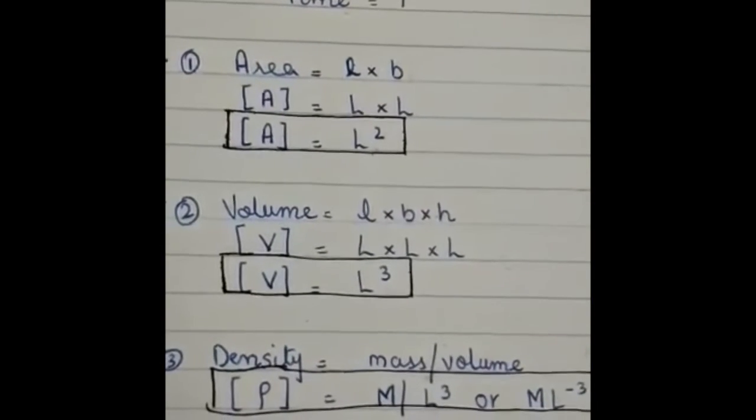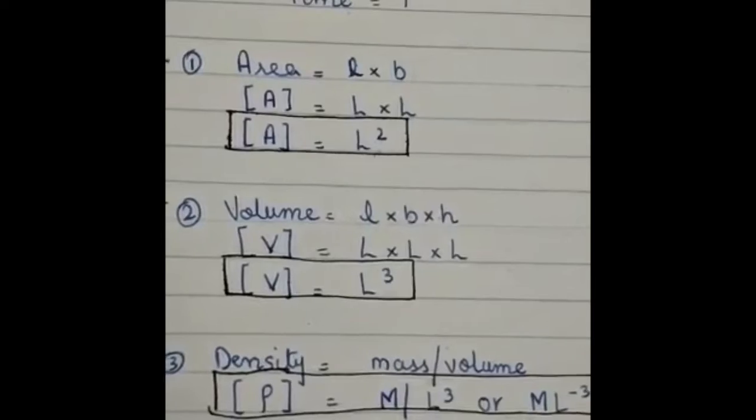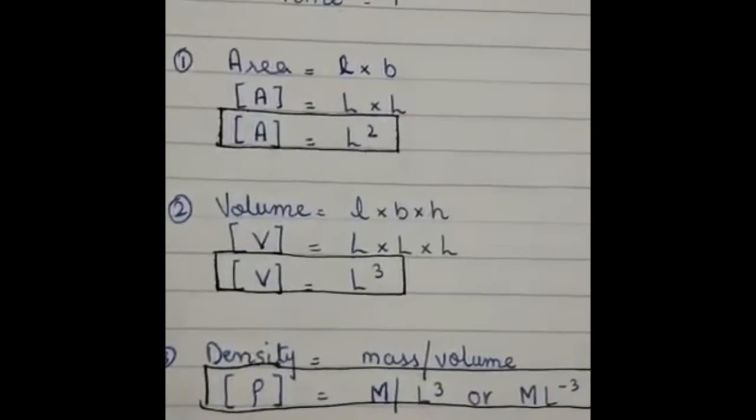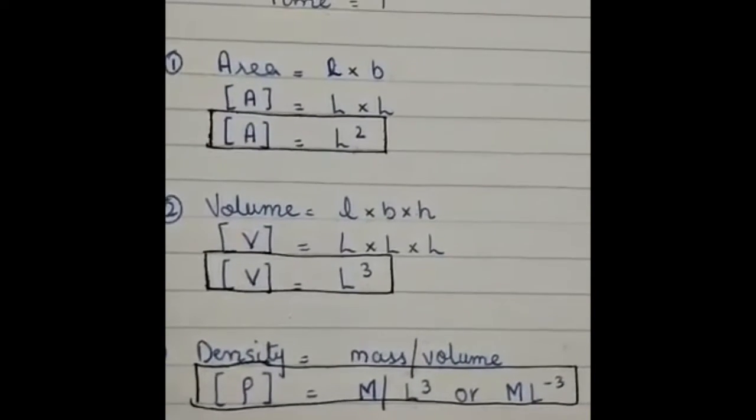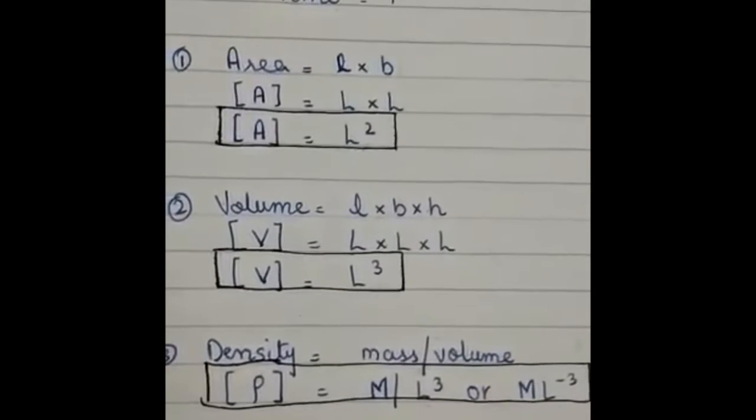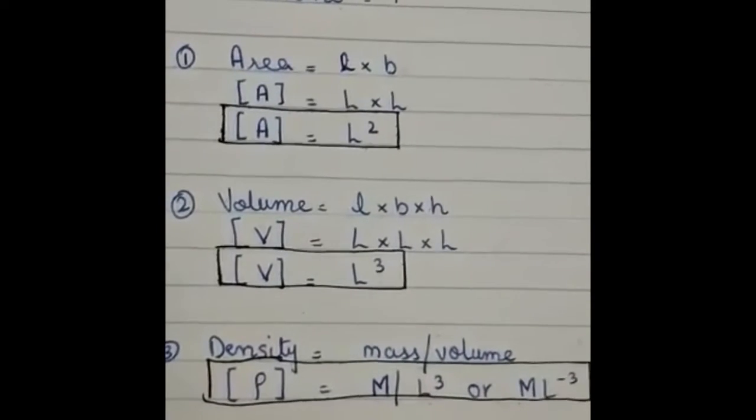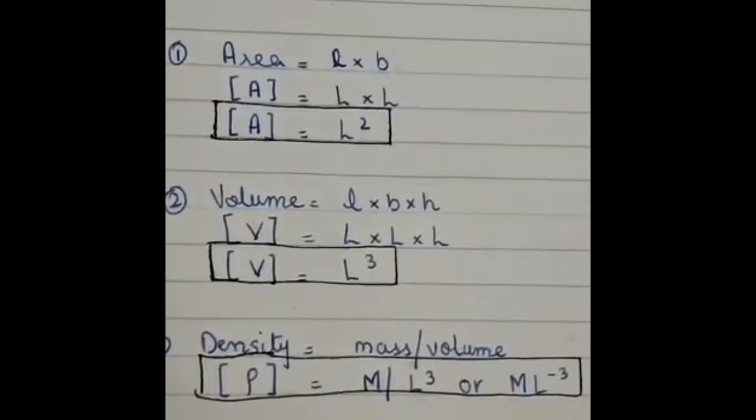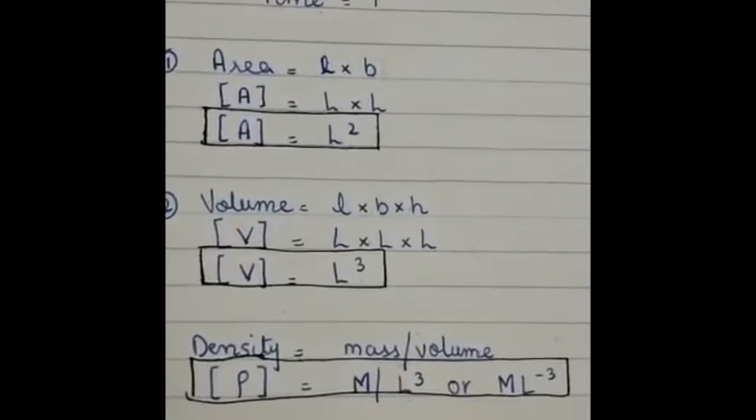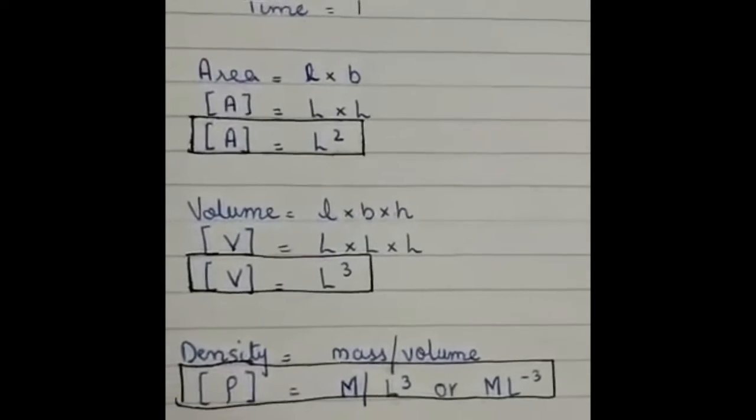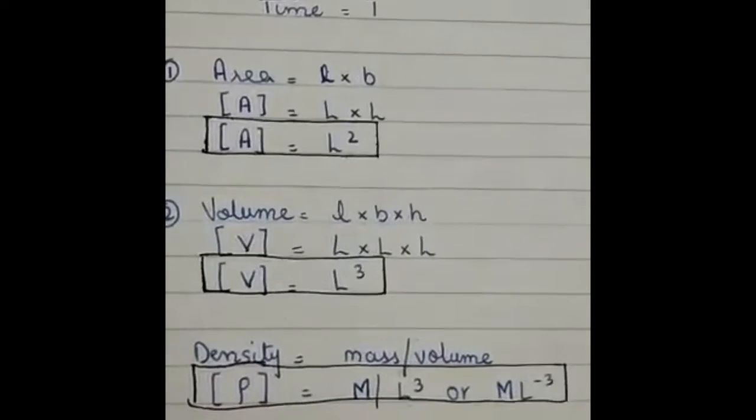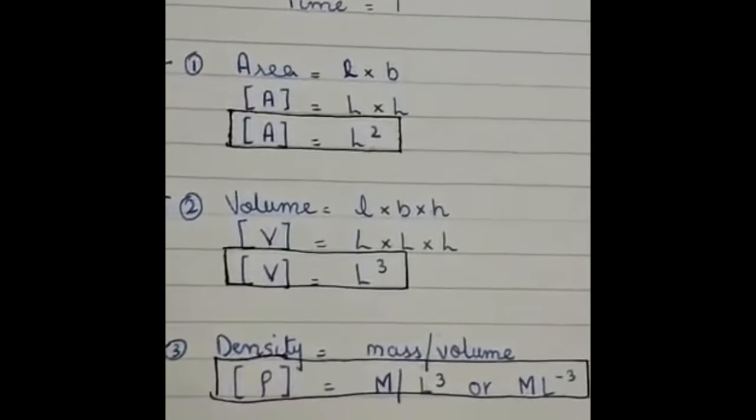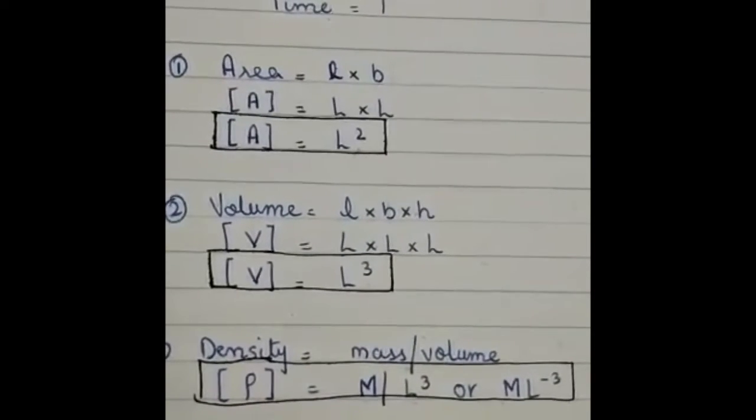So now we are calculating the dimensions of physical quantities like area which is length into breadth. So length has a dimension L and breadth has also dimension L, so area has a dimension of L square.